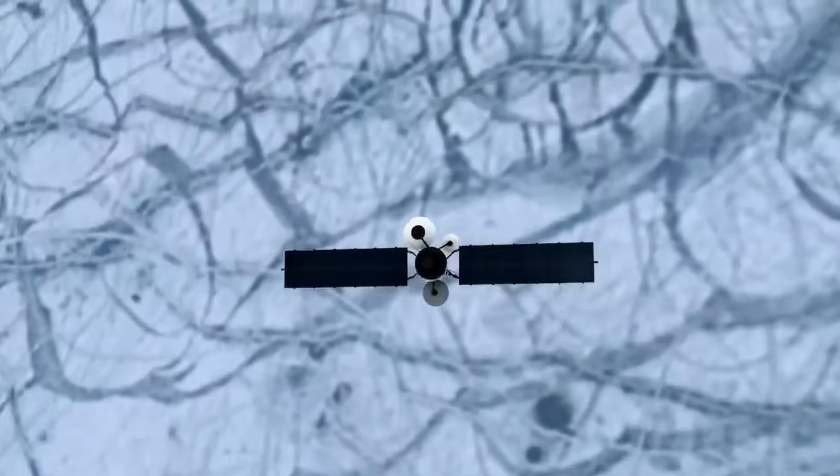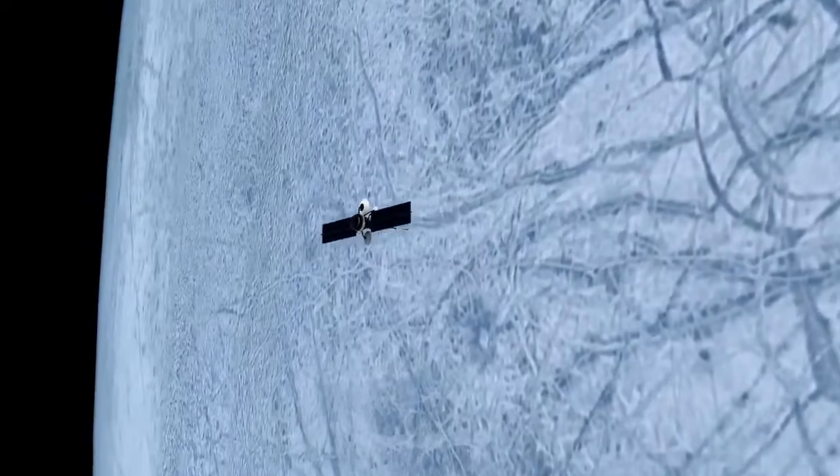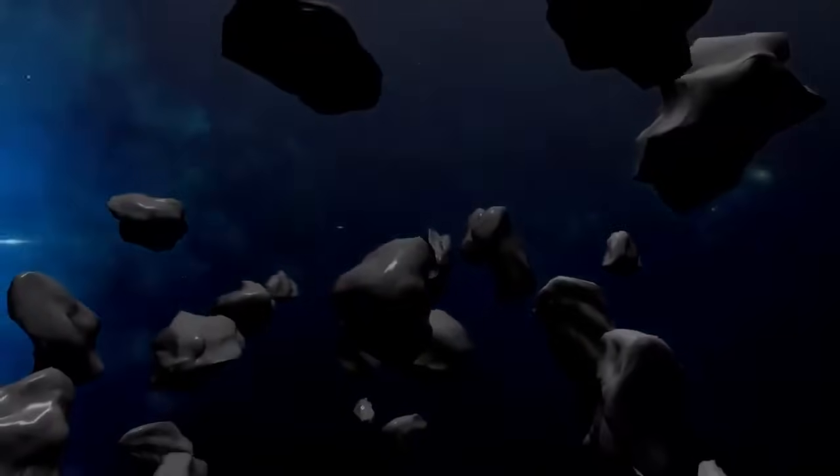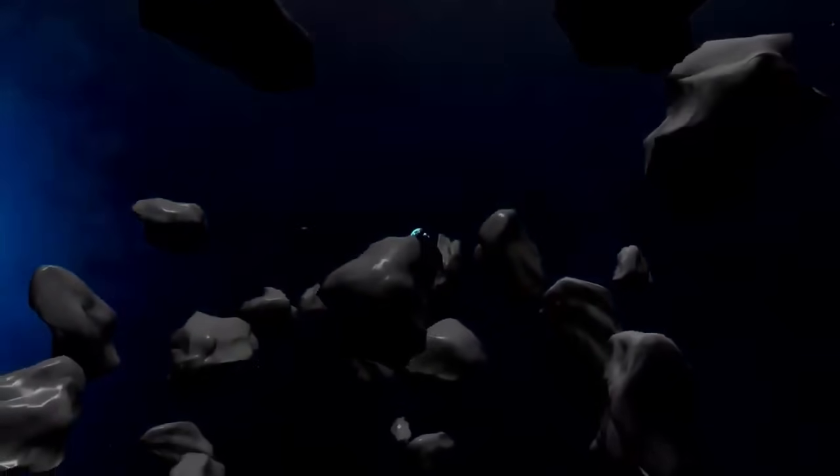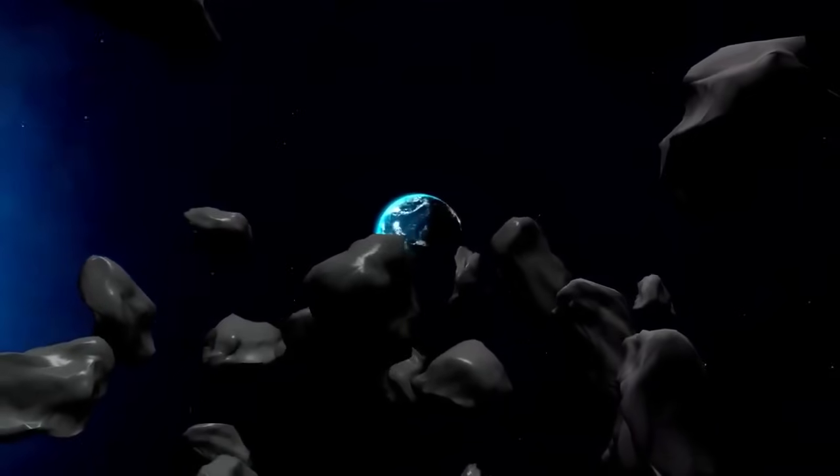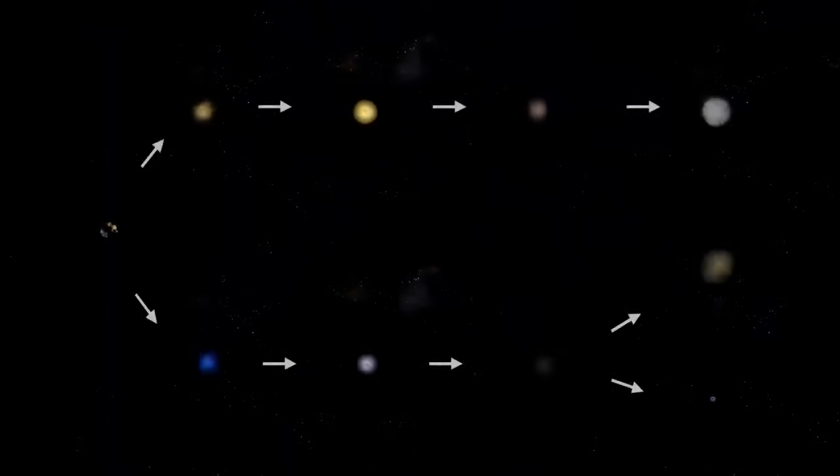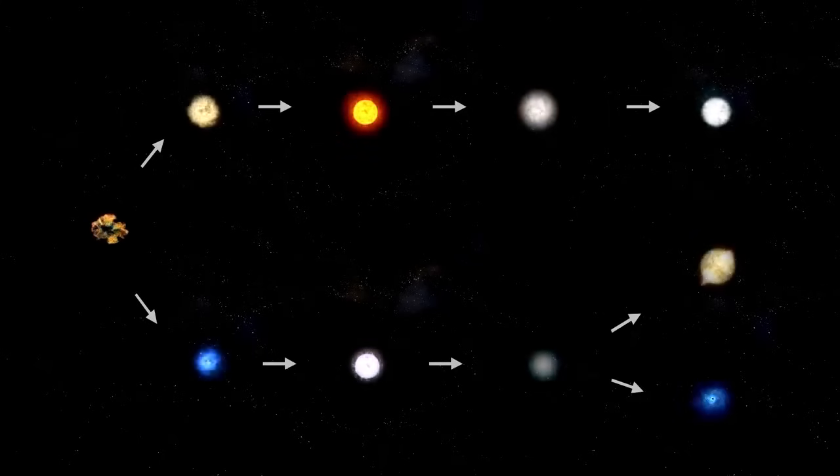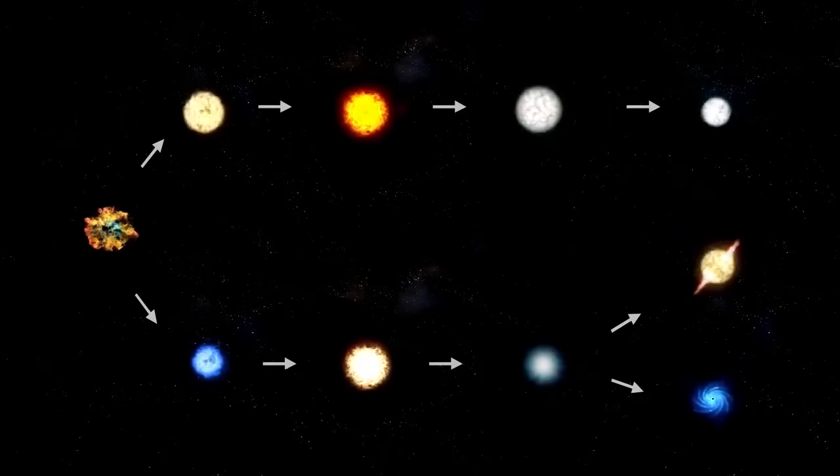Thanks to this gravitational assist, a journey that would normally have taken 30 years from Earth to Neptune would be reduced to just 12 years. However, there was a catch. This alignment occurred only once every 176 years. Faced with such an exceptional opportunity, NASA acted quickly.